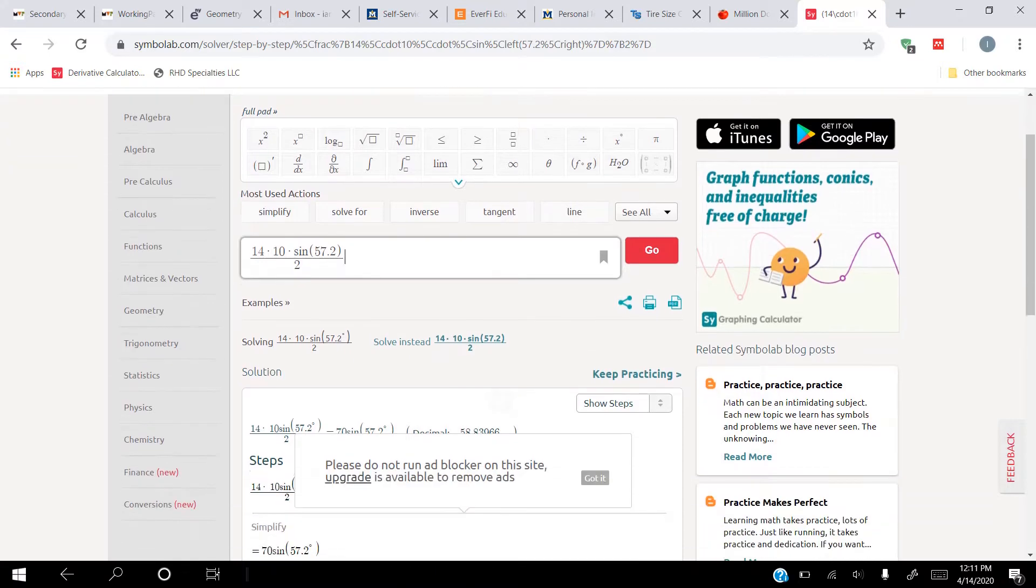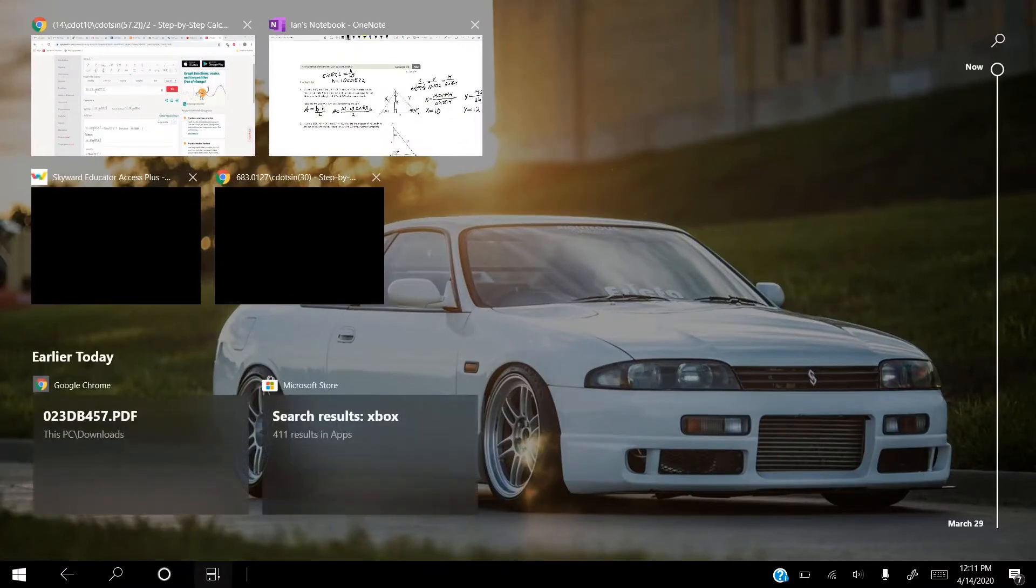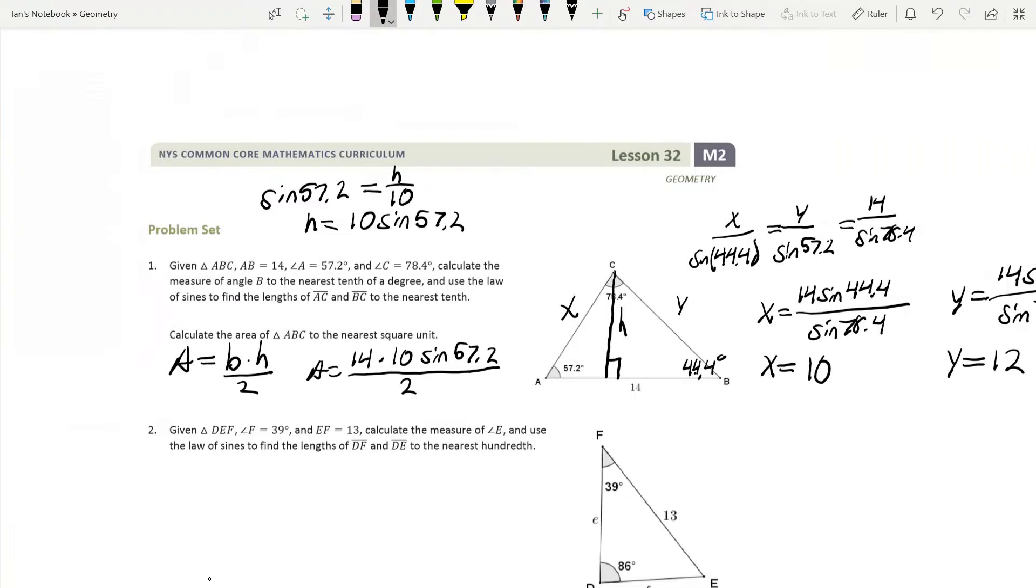So from here, we can see that it is 58.839, and I said to round it to the nearest whole square unit. So we're going to go with 59. So the area is 59 units squared. And we don't know what those units are, so we're just going to say units squared.